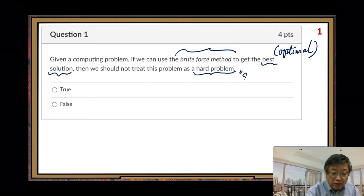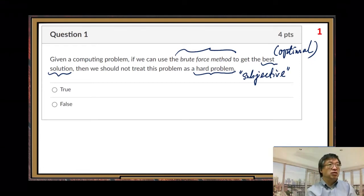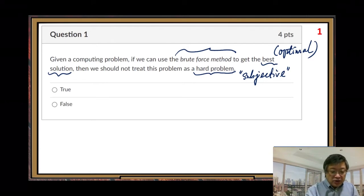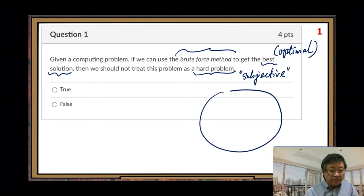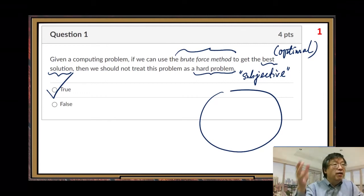Then we should not treat this problem as a hard problem. Many people feel this is subjective — and yes, it's true, it is subjective. But even under the subjective context, some questions we can still say are easy; they are not hard. Here we have that situation. So, let me pick the answer: True. We should not treat this problem as a hard problem because brute force method can give us the optimal solution. How can we say this is a hard problem?